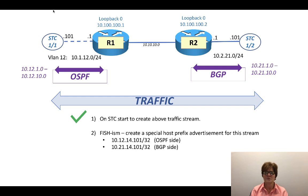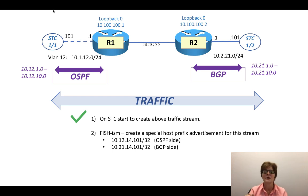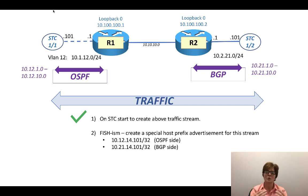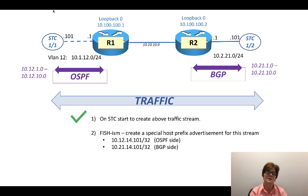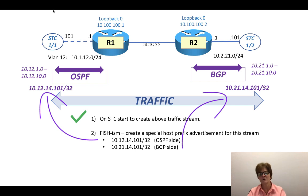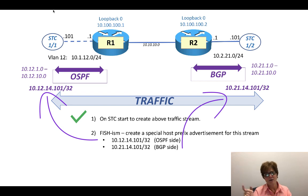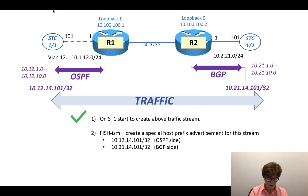You may also want to - if it's part of the test - flap those background prefixes: inject them, pull them out, inject them, pull them out. Meanwhile this one specific traffic stream is supposed to stay solid. What I like to do is create a dedicated host route, which gives me a lot of wiggle room if the test changes. So from that perspective, on the OSPF side we're going to go back to the Spirent Test Center and I'm going to add a 10.12.14.101 host route. OSPF is going to add that, and then BGP is going to add another one. They're both going to be host routes.